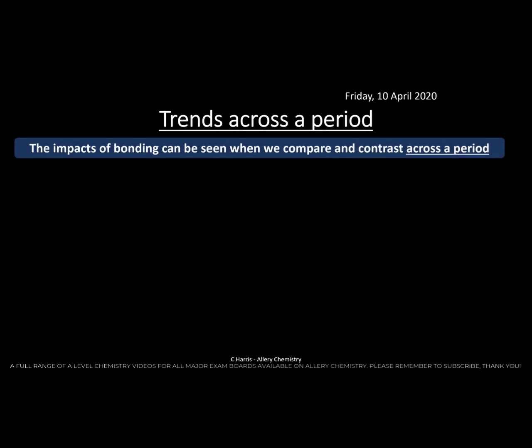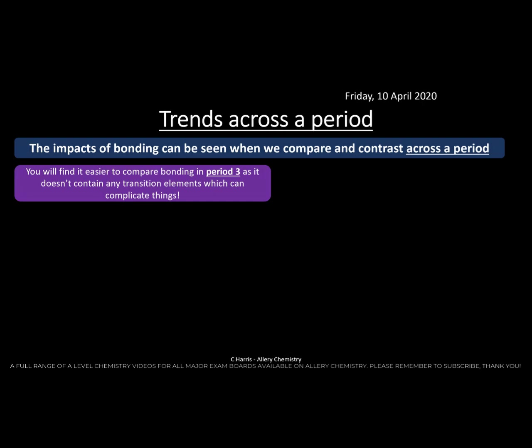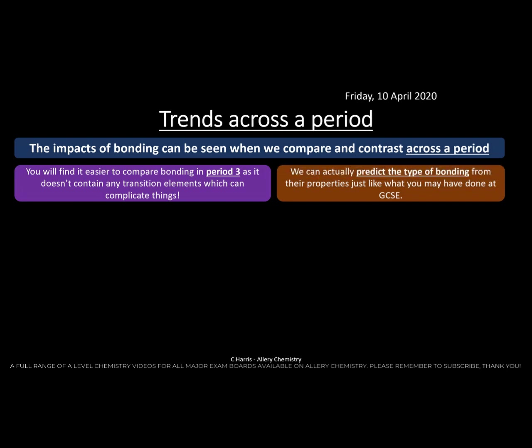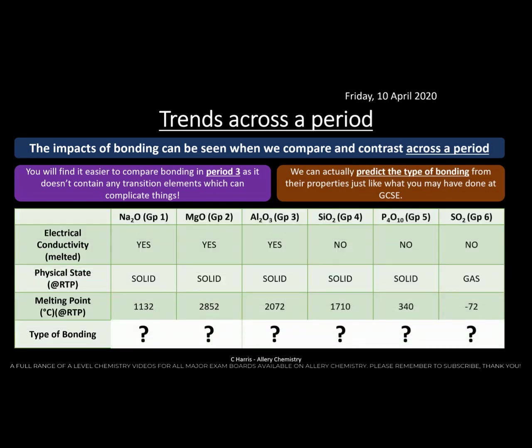Now let's look at trends across a period. The impact of bonding can be seen across a period. We'll look at period 3 because it's simpler — there are no transition metals to complicate things. We can predict the type of bonding from physical properties. Looking at the oxides across period 3 — sodium oxide, magnesium oxide, aluminium oxide, etc. — allows us to compare them easily since we're bonding each element with the same element (oxygen).